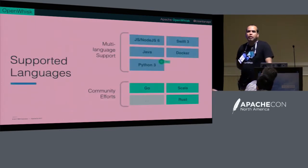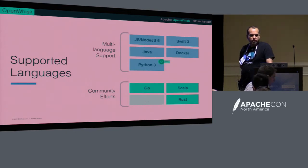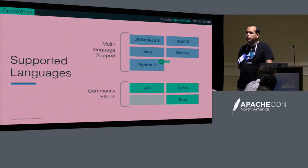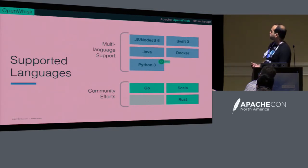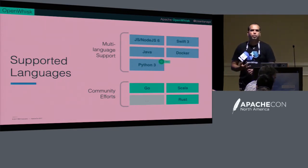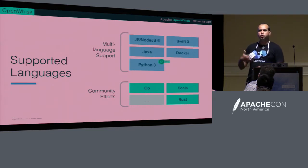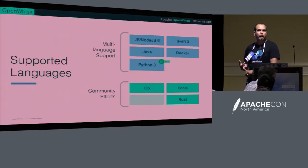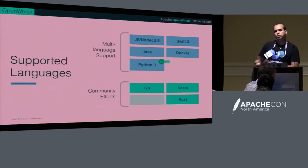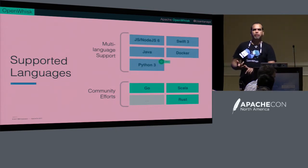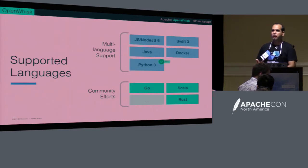In terms of supported languages out of the box: we support Node.js — very popular by analytics — and also Java. Swift 3 for people doing Apple/Swift on Linux development. Python 3 was added, but Python 2 is also still supported. I know there's a big debate between Python 2 and Python 3 — I'm not a Python guy.